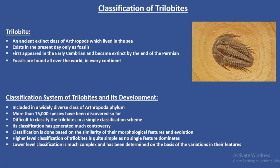Based on the similarity of their features — morphological, anatomical, and evolutionary traits — trilobites are classified into a systematic order. The higher level of classification of trilobites is quite simple because none of their identifying features dominates in such classification. On the other hand, the lower level of classification is much more complex and has been determined on the basis of the variations found in their identifying features.